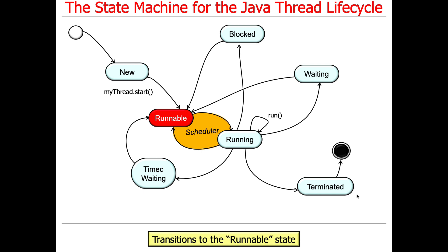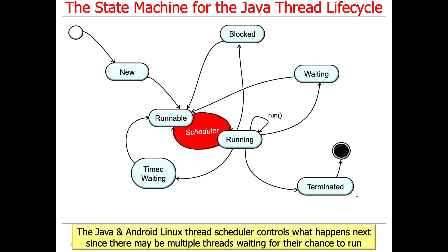When you're in the RUNNABLE state, this does not actually mean that you're running — it just means you're capable of running, that the resources have been allocated. If you recall our discussion about the happens-before relationship, the state of the thread object has been propagated to the right places in the memory hierarchies of the different processor cores. The thread scheduler controls when a given thread actually starts to run, because there could be many threads ready to run but only as many running as there are cores.